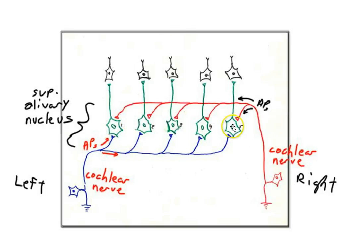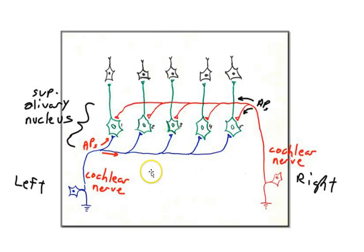Cell number five also doesn't respond, because the left cochlear nerve action potentials haven't had time to reach cell five. If we wait a little longer, the left reaches cell two while the right reaches cell four. Wait a little more, and the left reaches cell three at the same time as the right reaches cell three — so cell three gets simultaneous, coincident activity from both inputs.